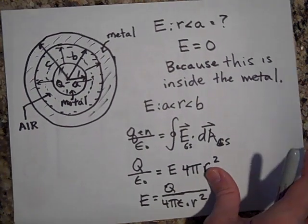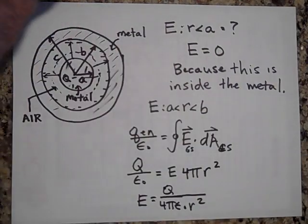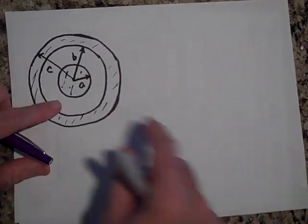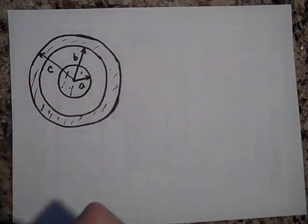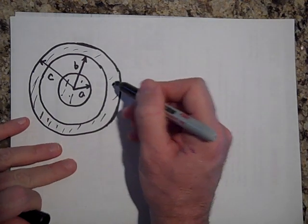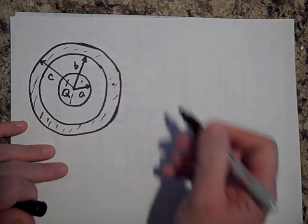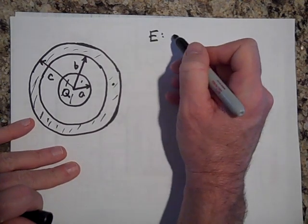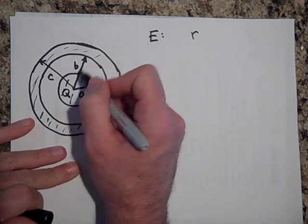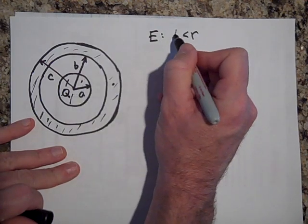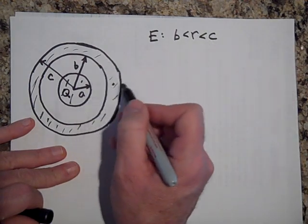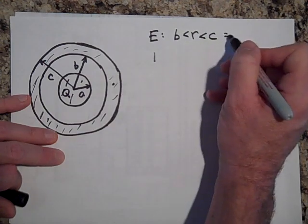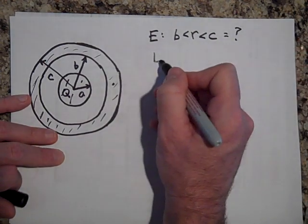Now let's see if we can't find the electric field at the next location, which is right in the metal. So the electric field inside here, right here, remember there's a charge Q here. The electric field is, R is greater than B but less than C. So somewhere in that region, the electric field has to be, that's what we're after. And that has to be equal to zero.